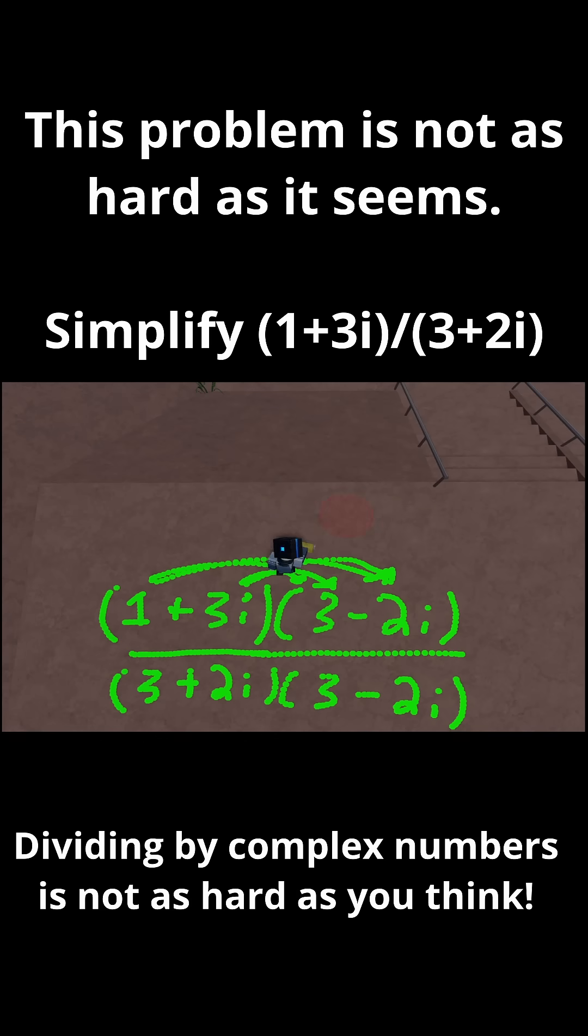So all of this just becomes 9. Let me write this. 9 plus 7i. So that's our numerator.